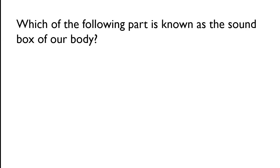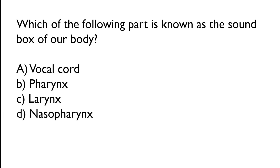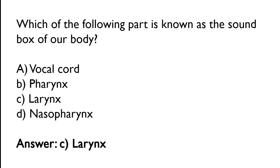Which of the following part is known as the sound box of our body? Options: vocal cord, pharynx, larynx, nasopharynx. The correct answer is option C — larynx is known as the sound box of our body.